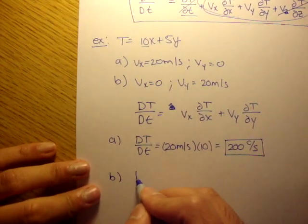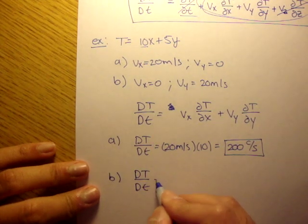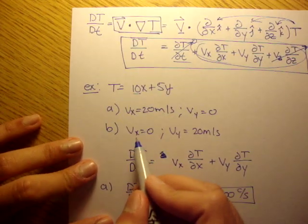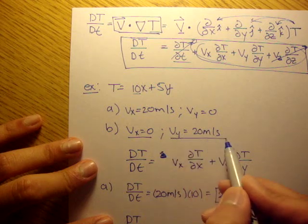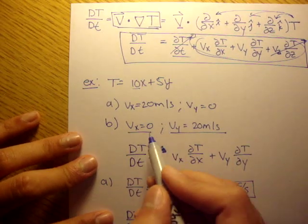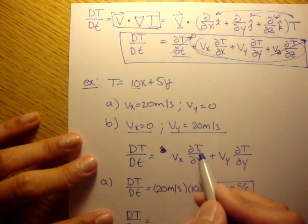For B, same thing. Well, in B, in this case, it's traveling vertically in the y direction only. So our x term is 0.